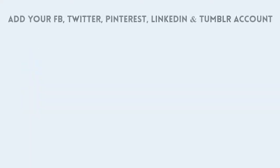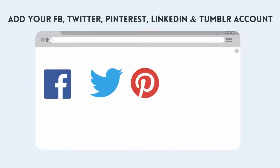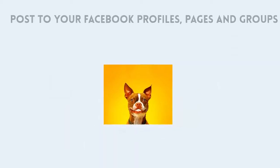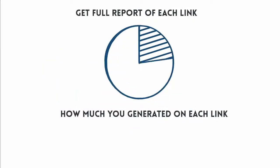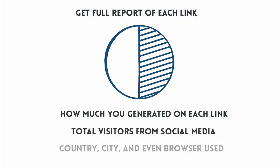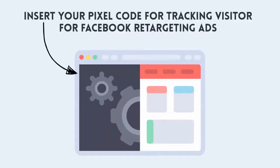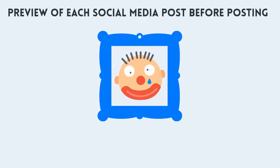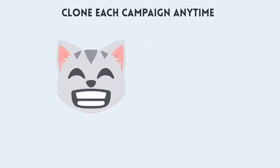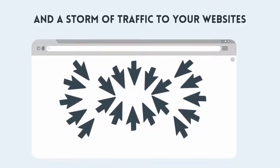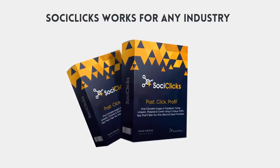All you need to do is add your Facebook, Twitter, Pinterest, LinkedIn, and Tumblr accounts, create a campaign with an image, custom link, title, and description, and post to your Facebook profiles, pages, and groups. You get a full report of each link — how much you generated, total number of visitors from each social media, country, city, and even browser used. Everything you need to improve your promotion campaign: insert your pixel code for Facebook retargeting ads, preview each social media post before posting, edit, schedule, and clone each campaign anytime.